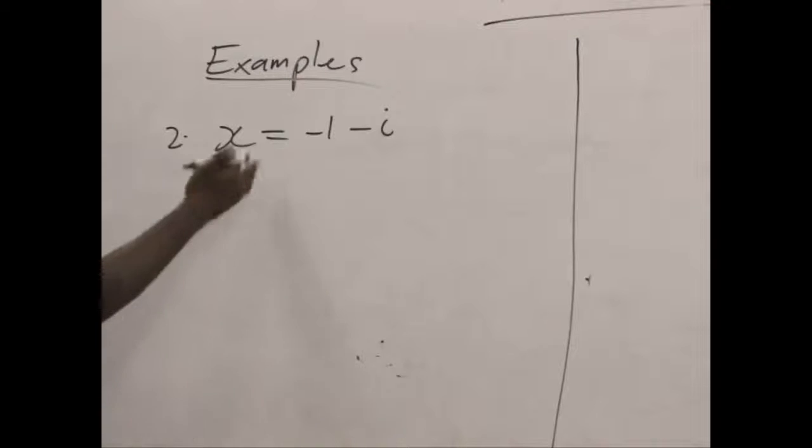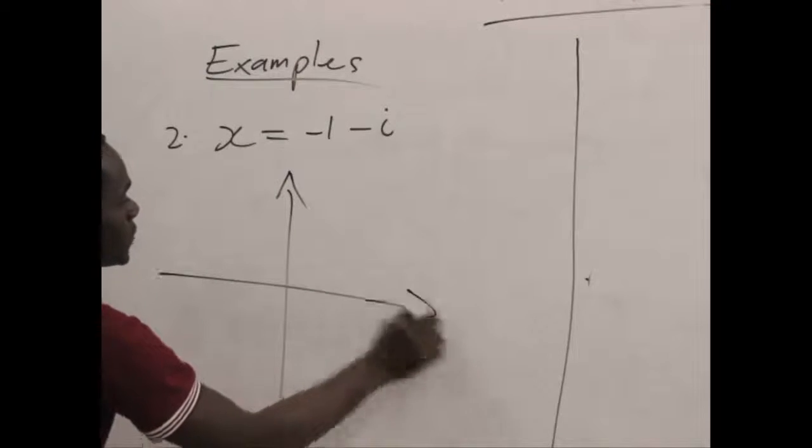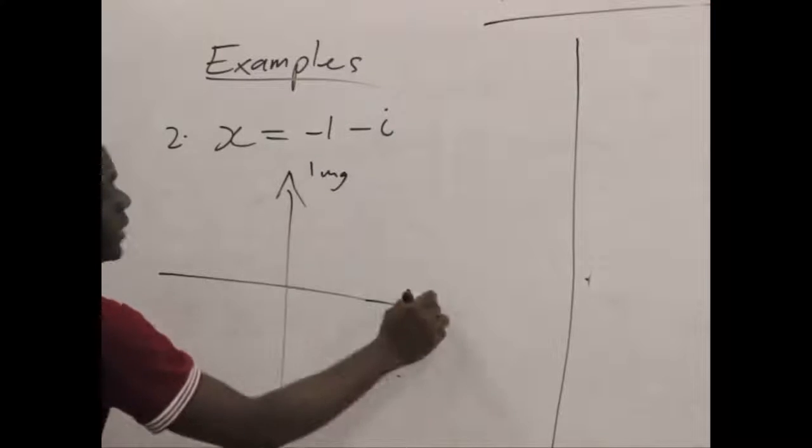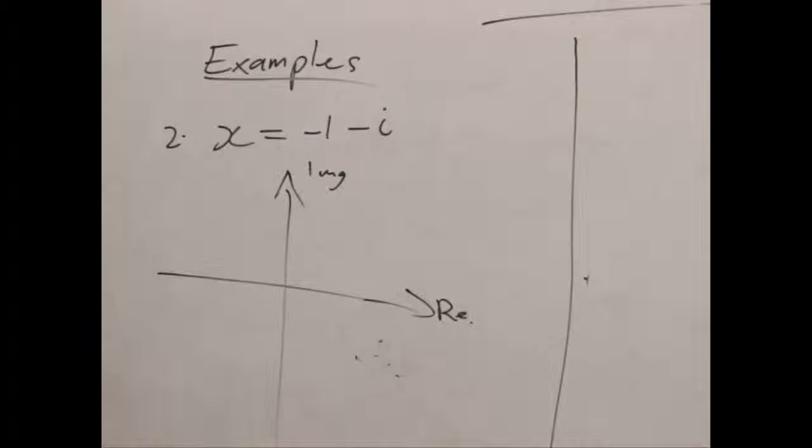So the first thing we do is to return this on the complex plane as we usually do. Imaginary real axis. We have minus 1 on the real axis. So minus 1 would be on the left hand side of the plane because that is where the negative numbers are.